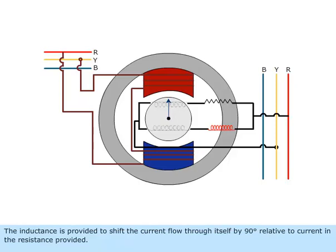The inductance is provided to shift the current flow through itself by 90 degrees relative to the current in the resistance provided.